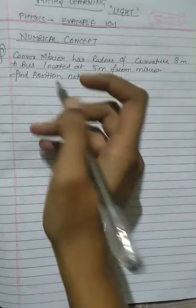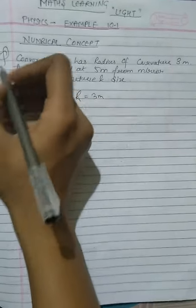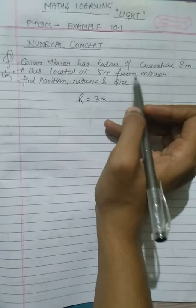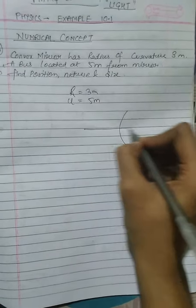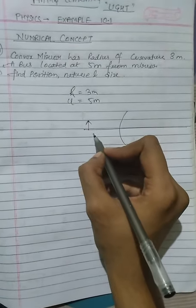This is example 10.1. The question is: convex mirror has radius of curvature 3 meters. Object is located at 5 meters from the mirror. Find position, nature, and size of the image. It's convex, so it looks like this. The object distance given is 5 meters.